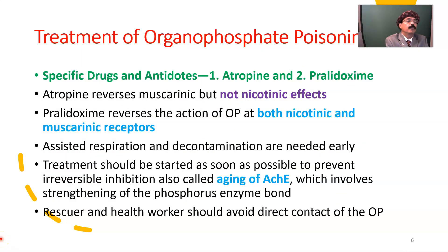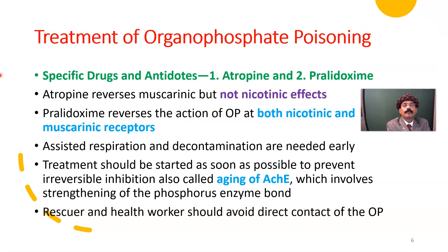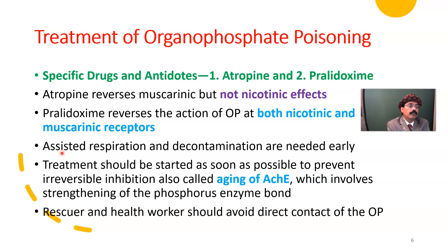For treatment of organophosphorus poisoning, we have specific antidotes: atropine and pralidoxime. Atropine works on the muscarinic receptor only, not on nicotinic receptors. Pralidoxime reverses the action of organophosphate at both nicotinic and muscarinic receptors. We must maintain ABC — airway, breathing, circulation — and perform decontamination, with healthcare workers protecting themselves from direct contact with the insecticide. Treatment should be started as soon as possible to prevent irreversible inhibition, called aging, of acetylcholine esterase.